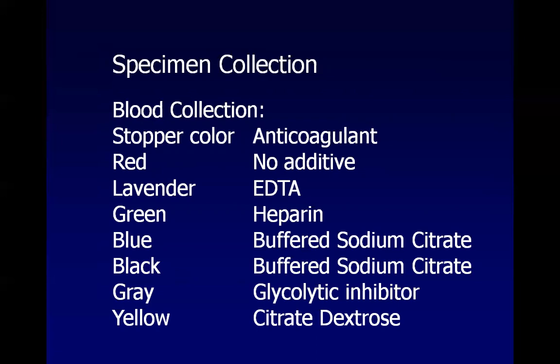Blue and black tubes both contain sodium citrate but in different ratios. The blue tube is prepared in a 9:1 ratio (blood to anticoagulant) and is used for coagulation studies because it preserves labile coagulation factors. The black tube is prepared in a 4:1 ratio and is used for ESR by the Westergren method. The gray tube contains sodium fluoride, a glycolytic inhibitor that inhibits glycolysis for three days. The yellow tube contains citrate dextrose, used for blood banking and paternity testing.